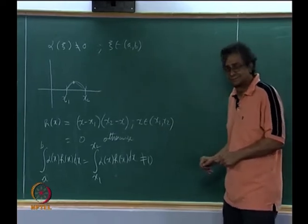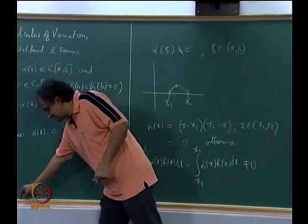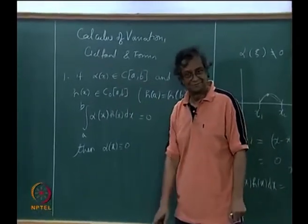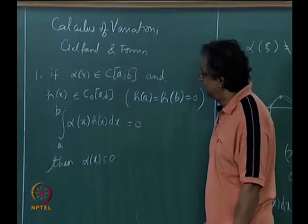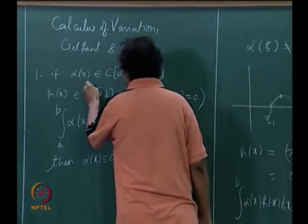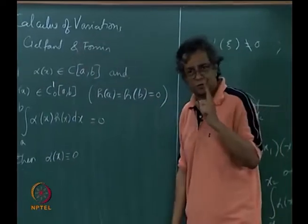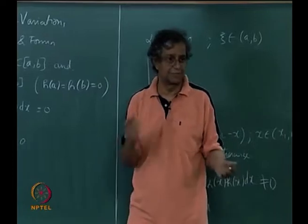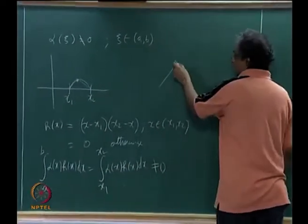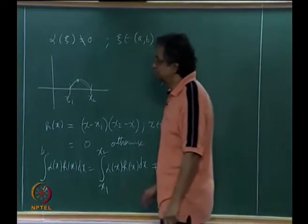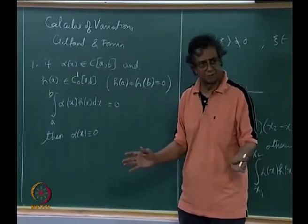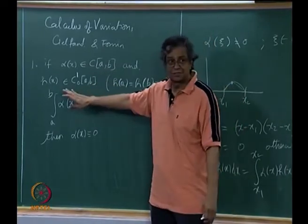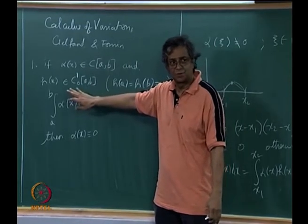Let us try one more. If α(x) ∈ C[a, b] — same as before — and now h(x) ∈ C¹[a, b]: the superscript 1 indicates h also has derivatives everywhere. This is the bowl of functions which are not only continuous but can also be differentiated everywhere, defined on [a, b] and zero at the endpoints.